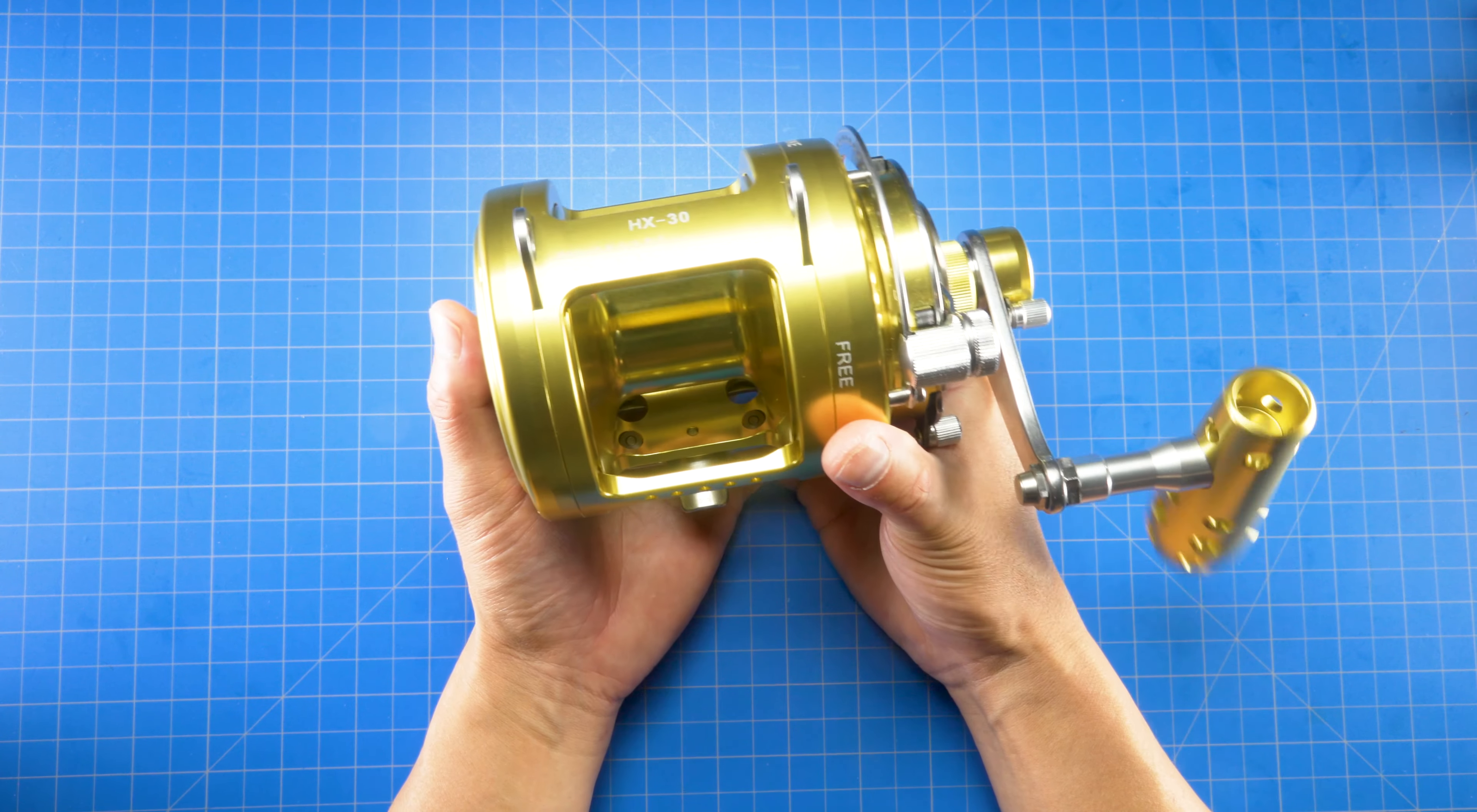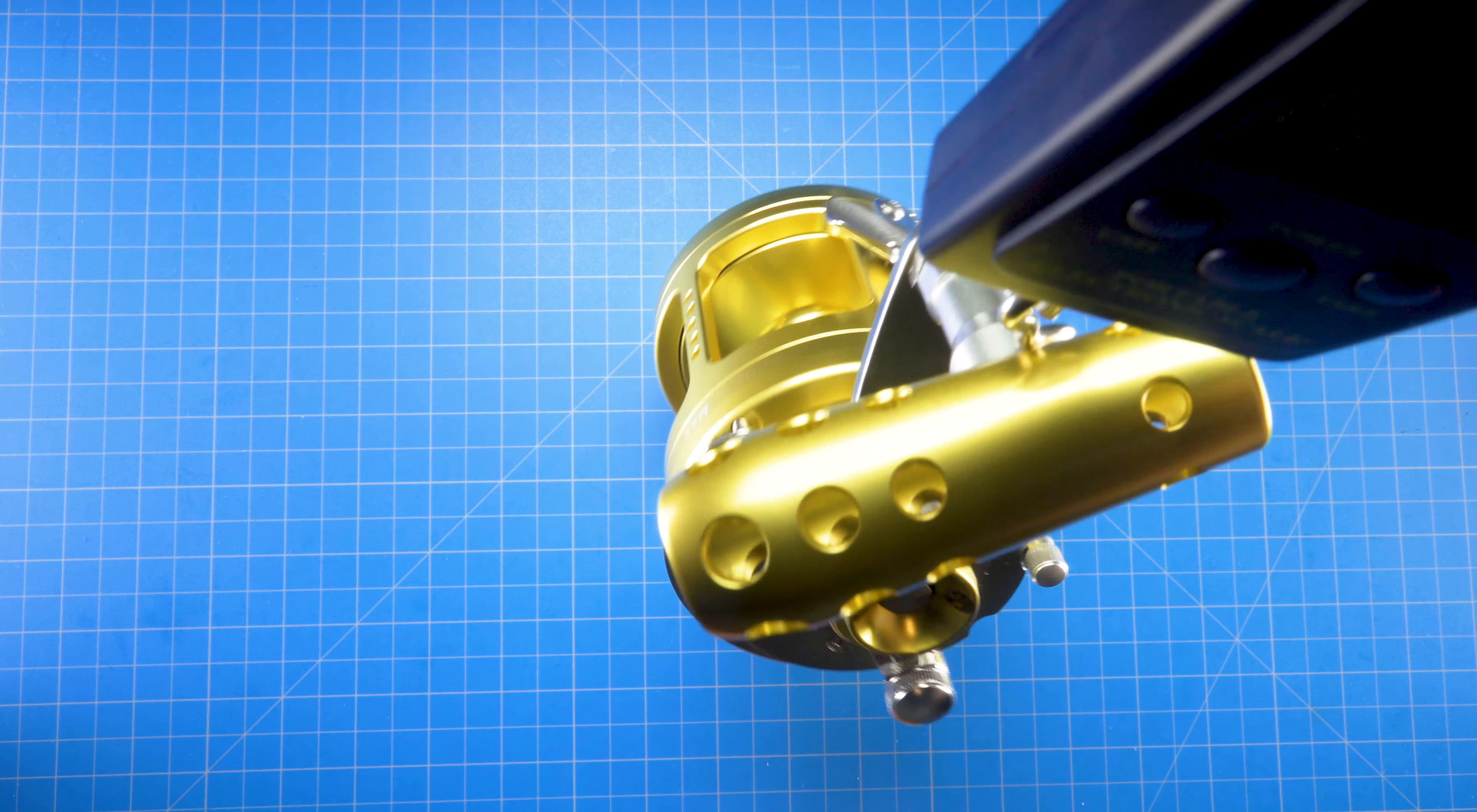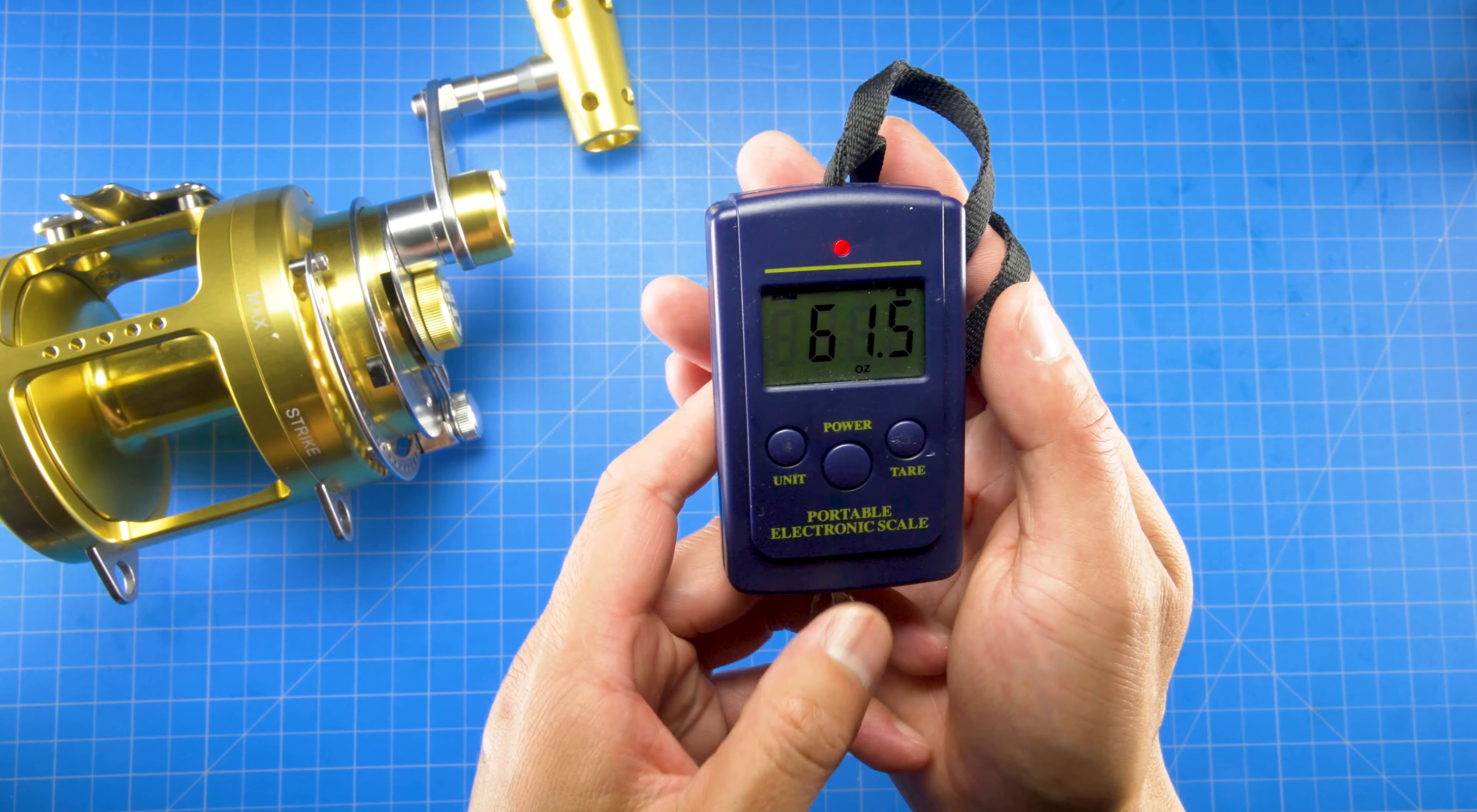So this is hefty. This is a hefty reel. I got this scale here. This is an AliExpress special. Let's see where it locks down at. If you guys could read that, 61.5 ounces.